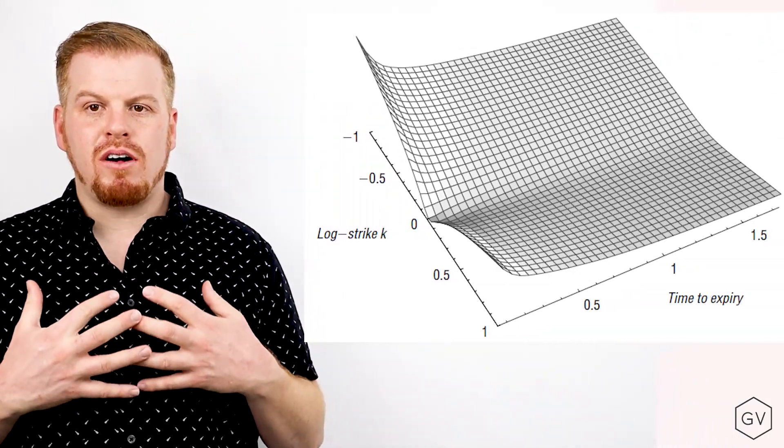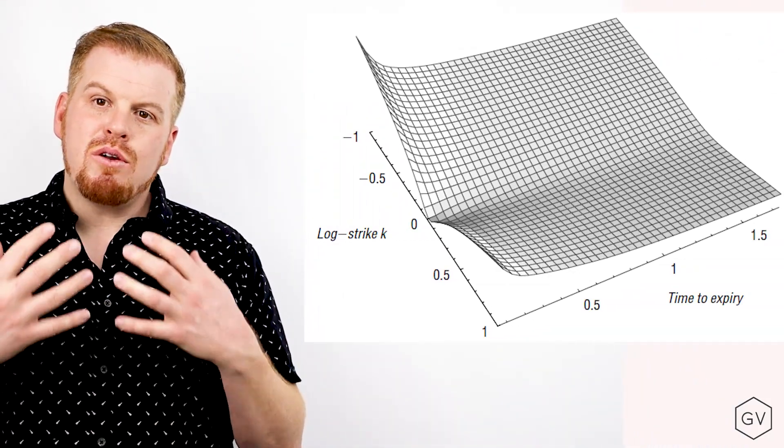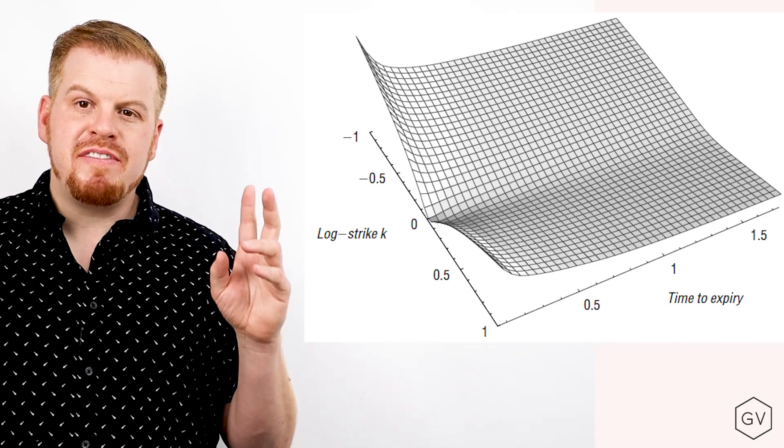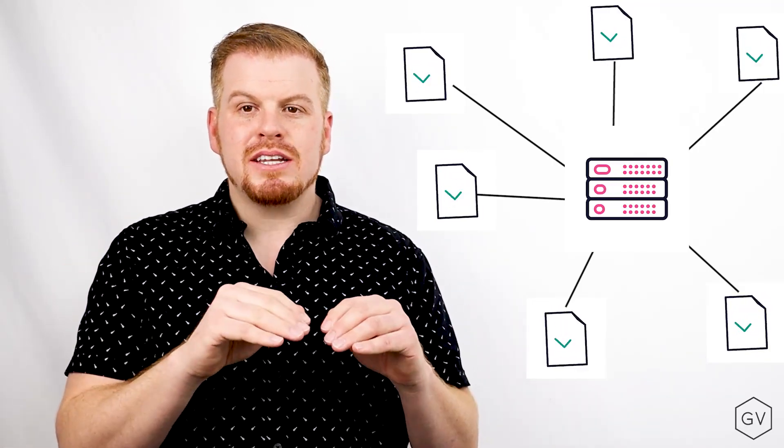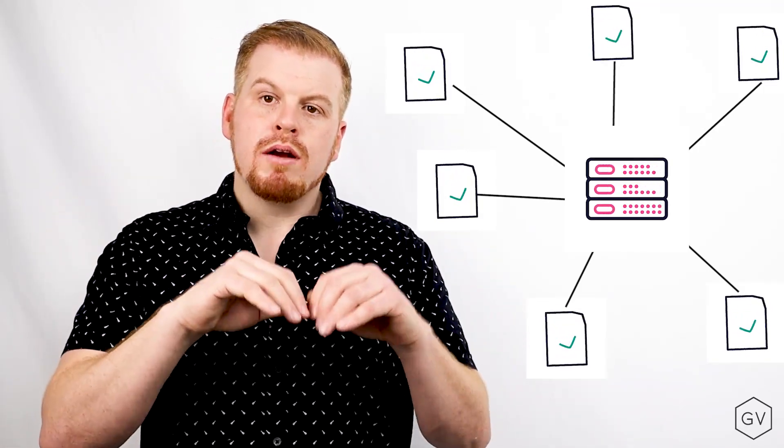The Zeta protocol maintains an internal volatility surface in order to keep internal fair value marks. This allows the risk engine to reference fair value markets despite the market becoming thin, or bids and offers completely disappearing.